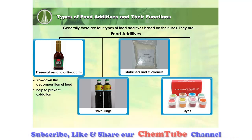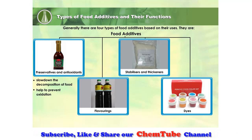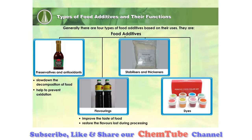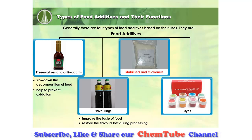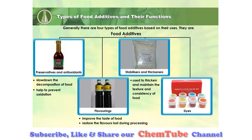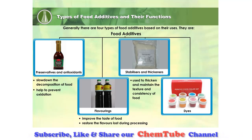Flavorings are the largest group of food additives. They are used to improve the taste of food and also to restore the flavors lost during processing. Stabilizers and thickeners are used to thicken and maintain the texture and consistency of food, such as instant soup and pudding.